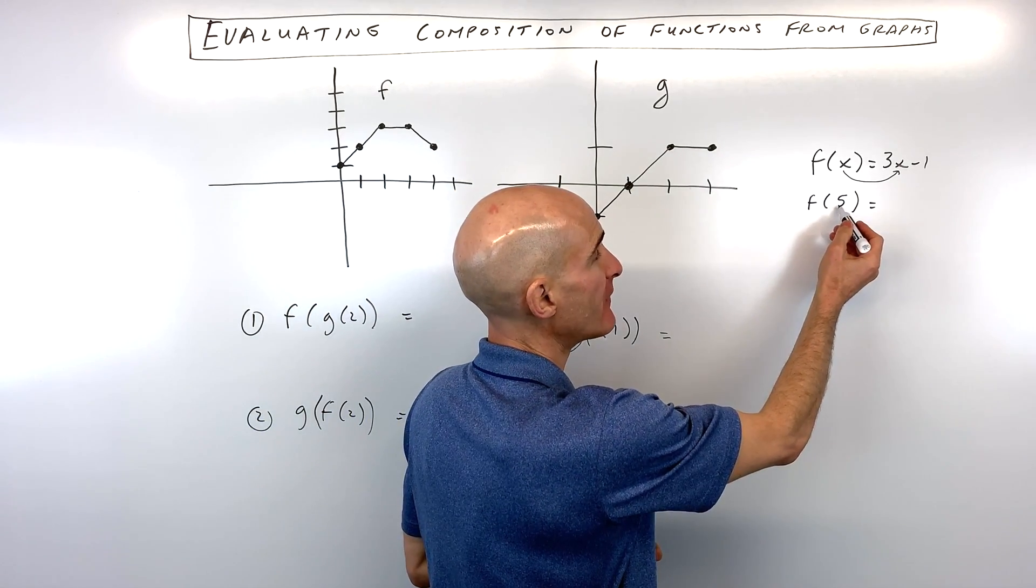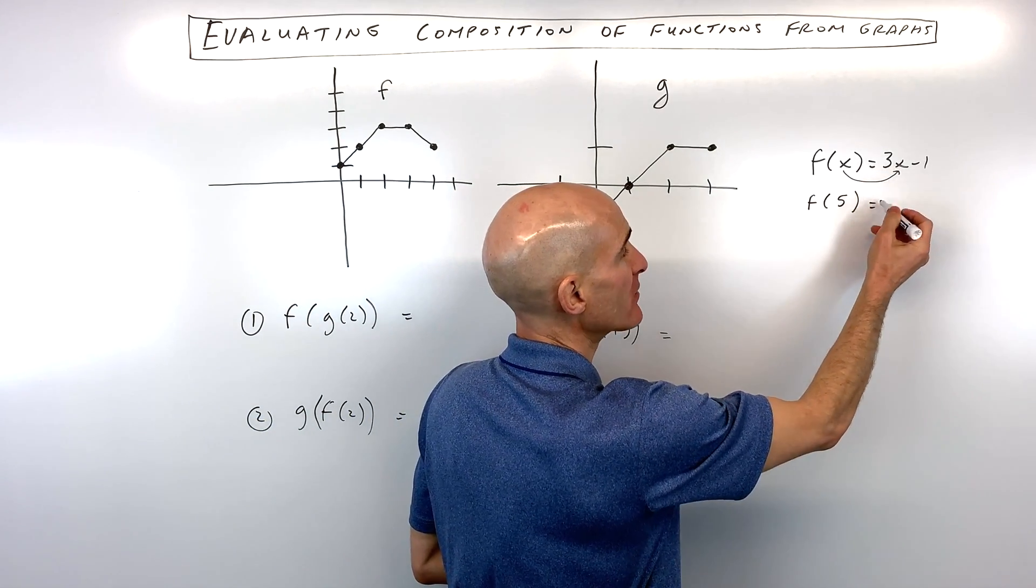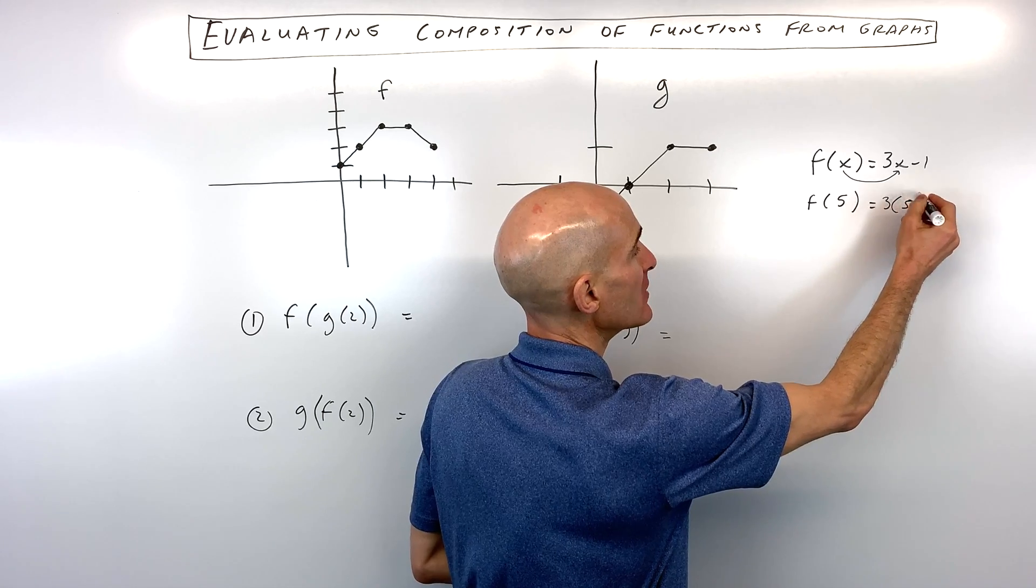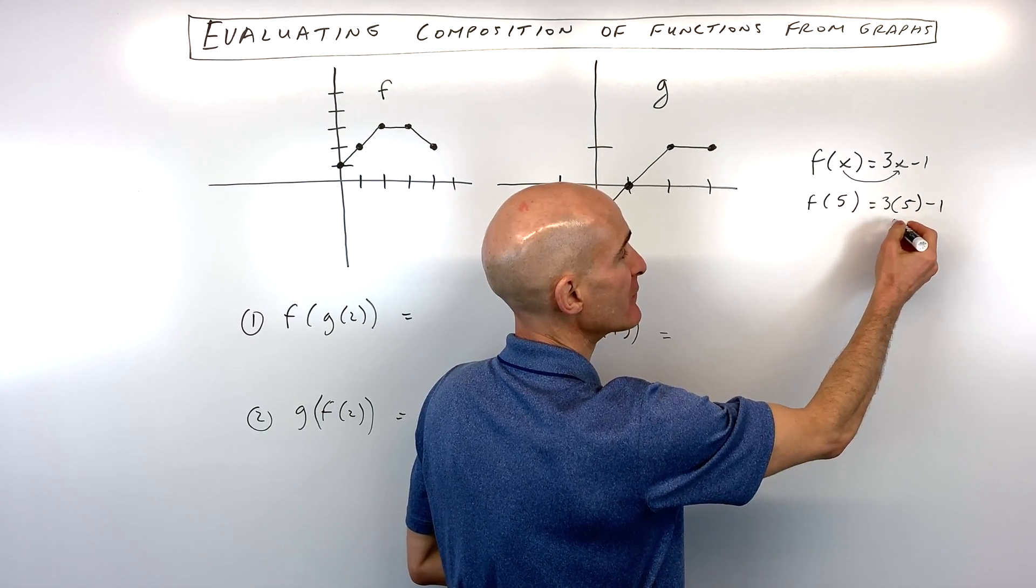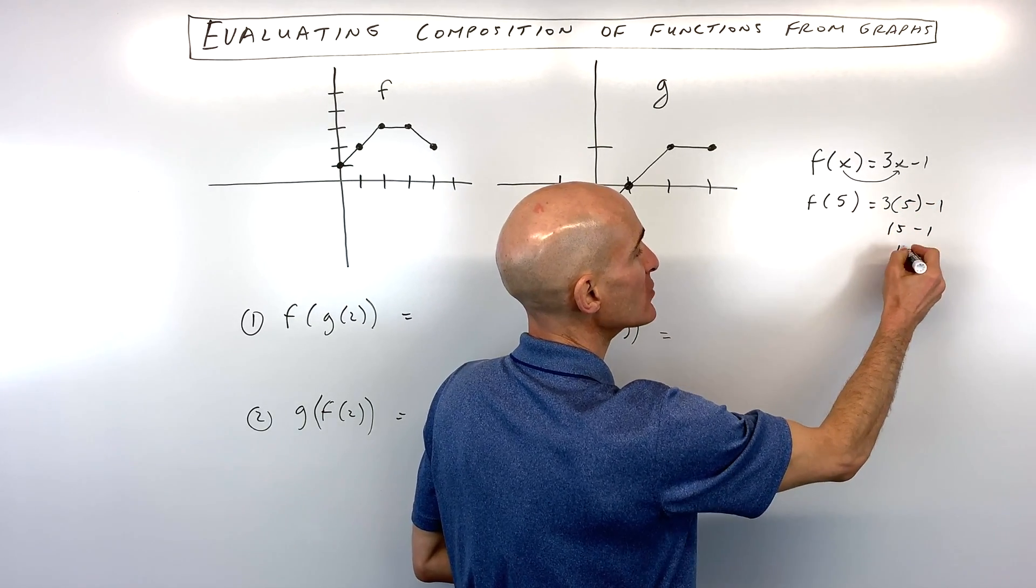For example, if we wanted to find out what f of 5 is, we would replace x with 5. So we'd have 3 times 5 minus 1. That'd be 15 minus 1, which is 14.